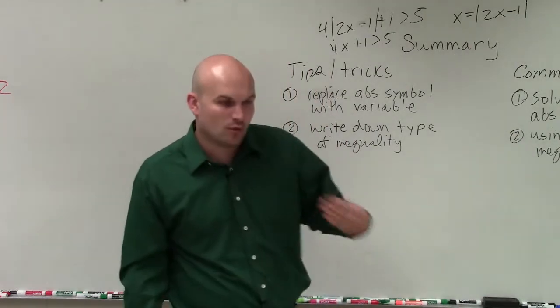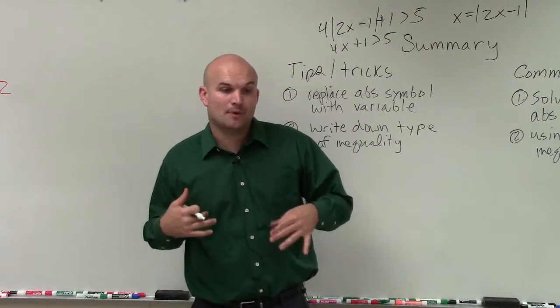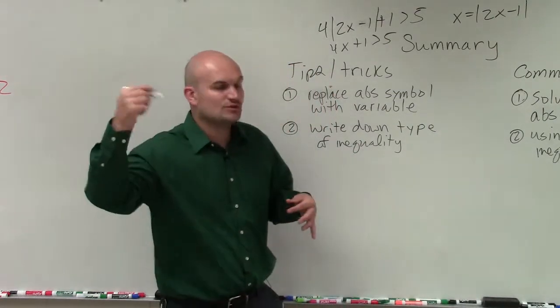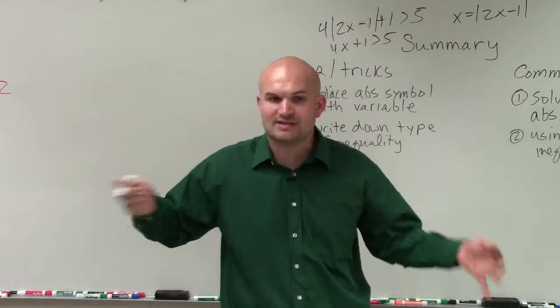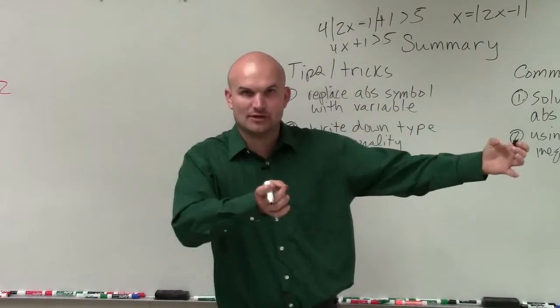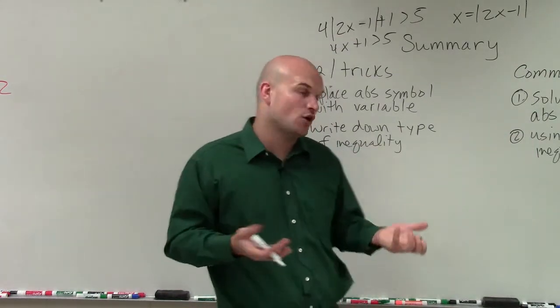The next thing is just write down the type of inequality. As I get into my common mistakes, a lot of students will forget or just get it wrong when they write that inequality. So once you determine what type of compound inequality you're dealing with, write it down. Especially when you have your two cases. Is one inequality and the other inequality, or one inequality or the other inequality? So what are your solutions? Is it an and or is it an or?